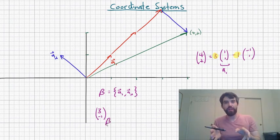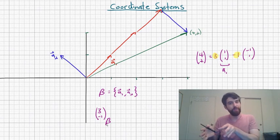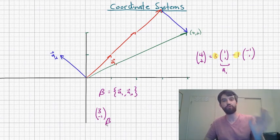So my notation for that is a scripted B down at the bottom. So I put my vector thought of as an instruction, and then I put a subscript that tells me what basis am I applying this instruction to.